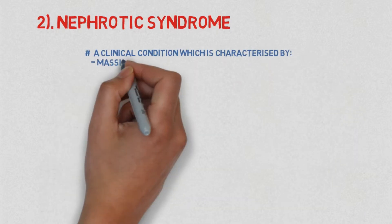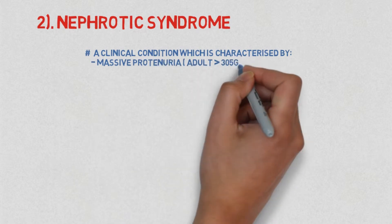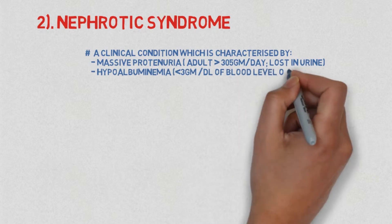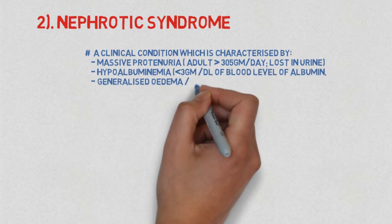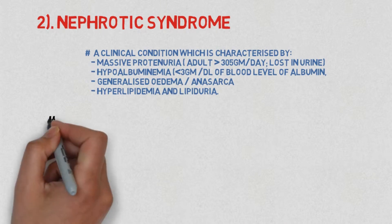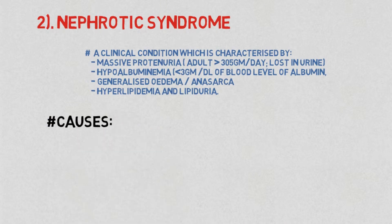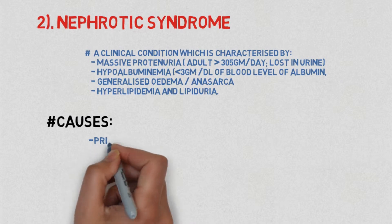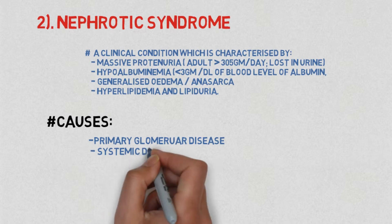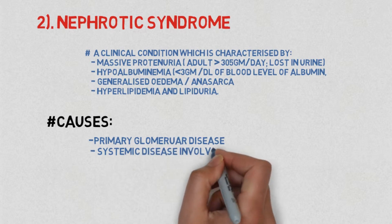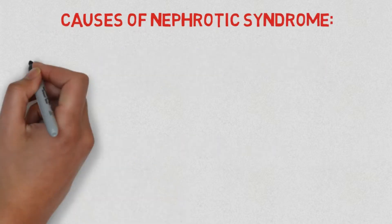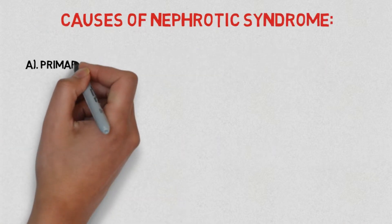In massive proteinuria there is a loss of 3.5 grams per day in urine — note: it is 3.5 gram, not 305 gram. Following the introduction, the causes of nephrotic syndrome include primary glomerular disease, systemic disease involving the glomerulus, drugs, and infection.